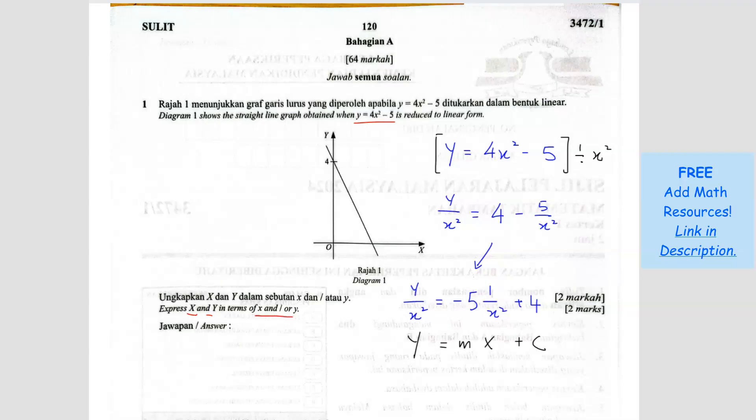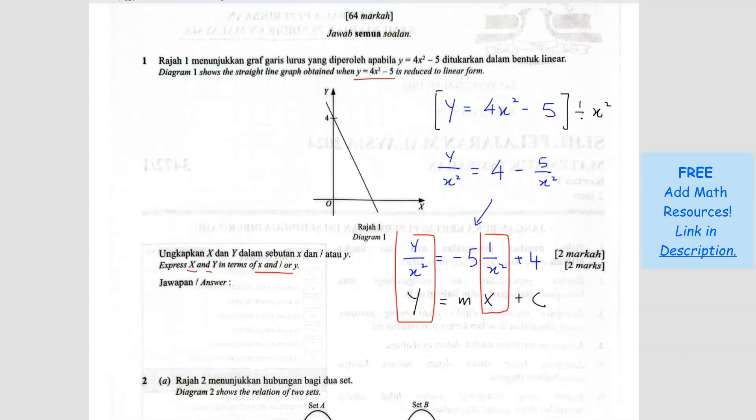Now because the c is 4, and everything is already aligned, we can say that Y is y over x², the gradient is negative 5, and X is 1 over x².